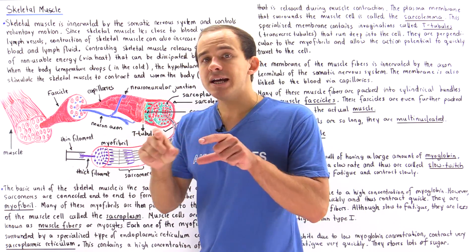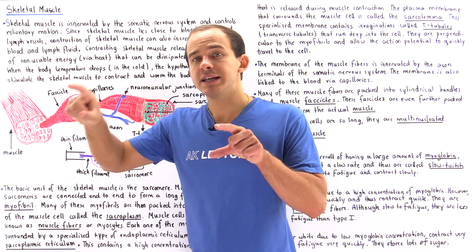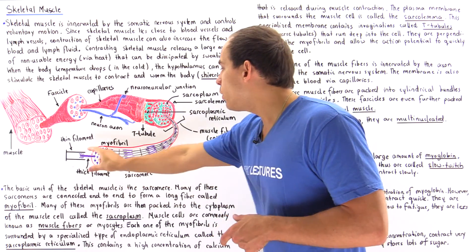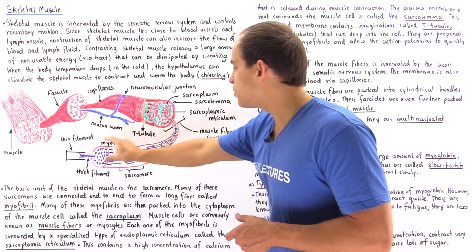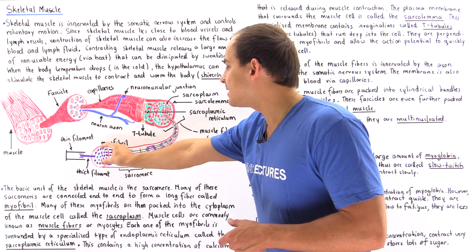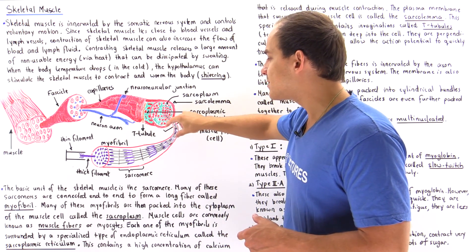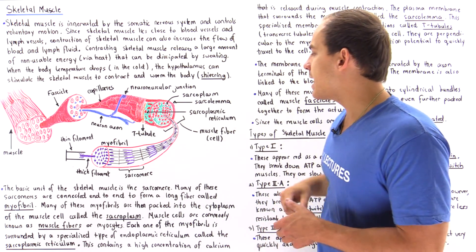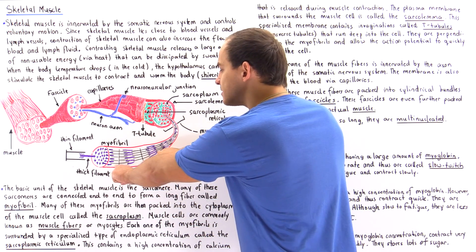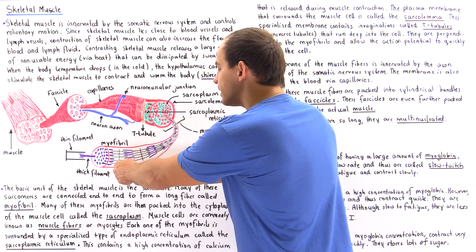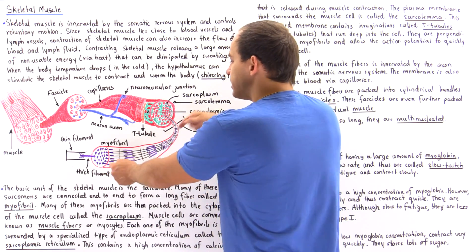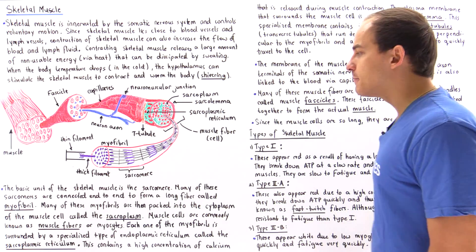Many of these sarcomeres are connected end-to-end to form a very long fiber called the myofibril. The myofibril consists of many adjacent sarcomeres connected end-to-end. This is one Z-line, this is a second Z-line, and between them is our sarcomere — and many of these sarcomeres are connected to form the myofibril.